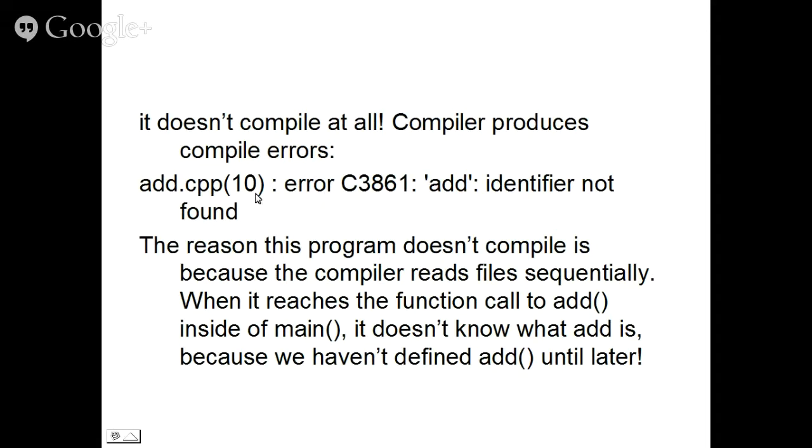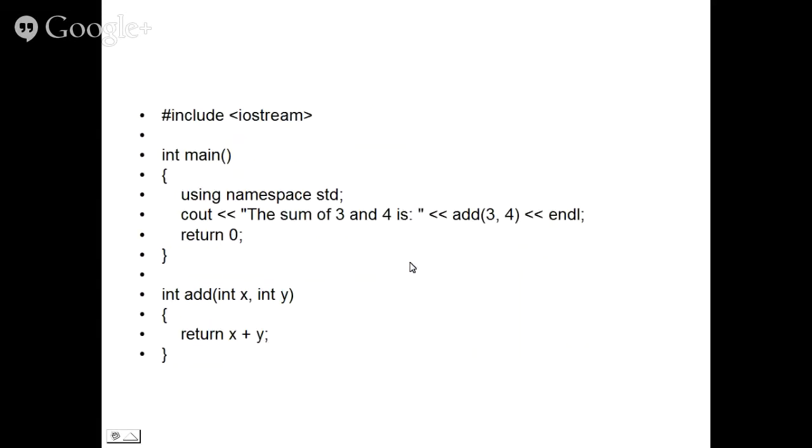identifier add, this is the exact error which will be produced here: add identifier not found. Now the reason is the compiler reads your files sequentially, line by line. So when it reaches the function call to add, see, if you see your program is starting with main and we have a cout and we are calling add.